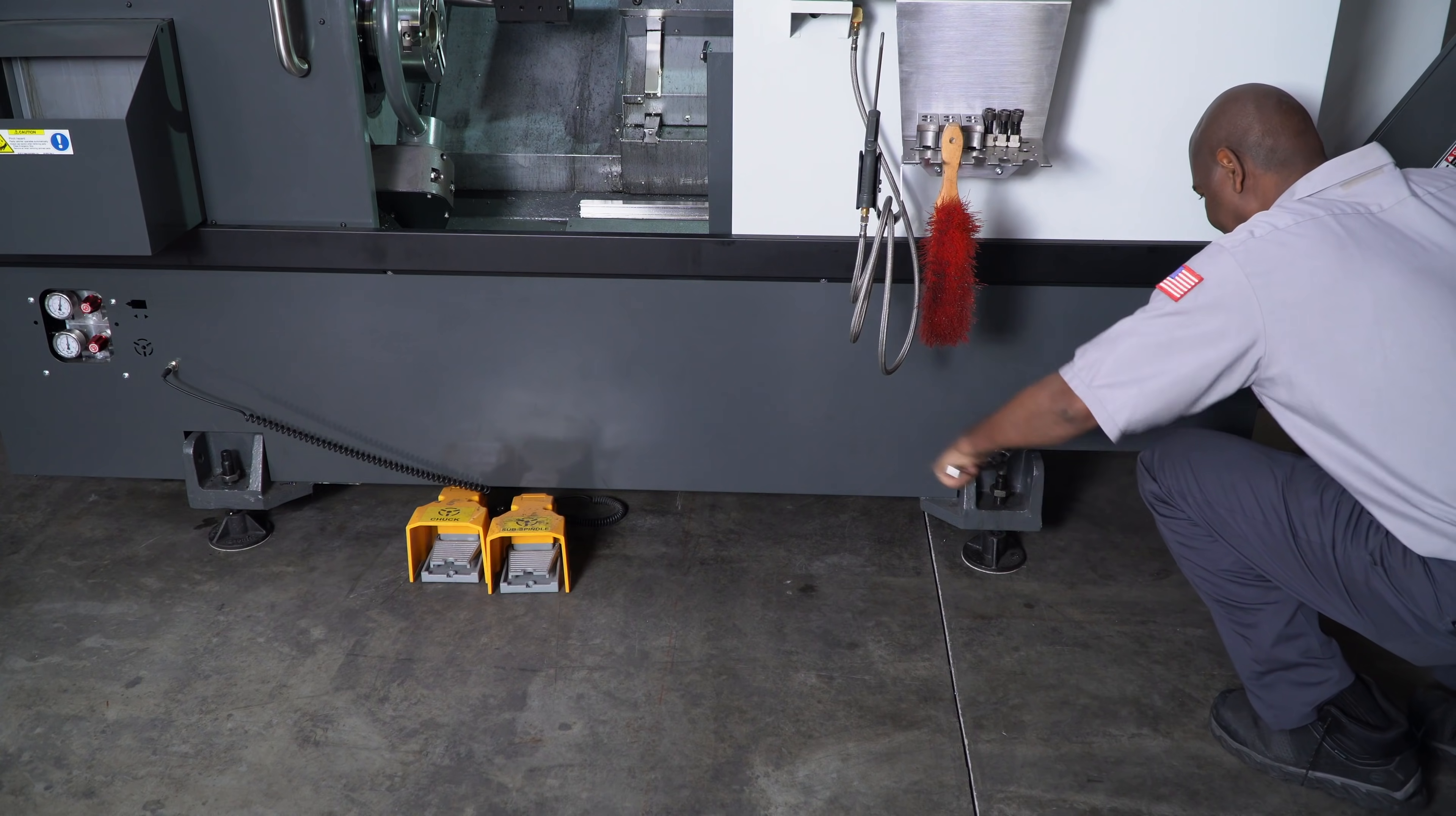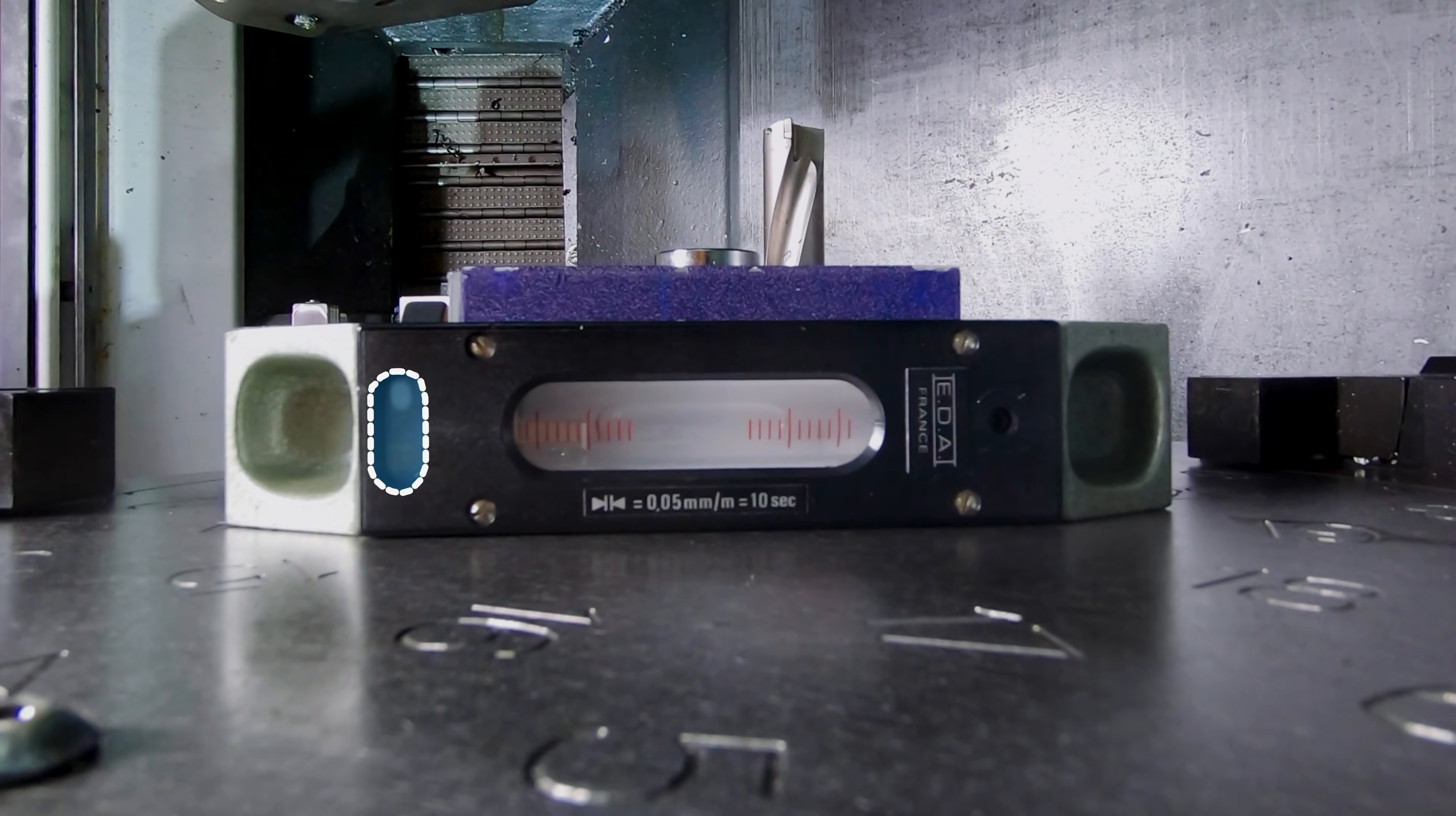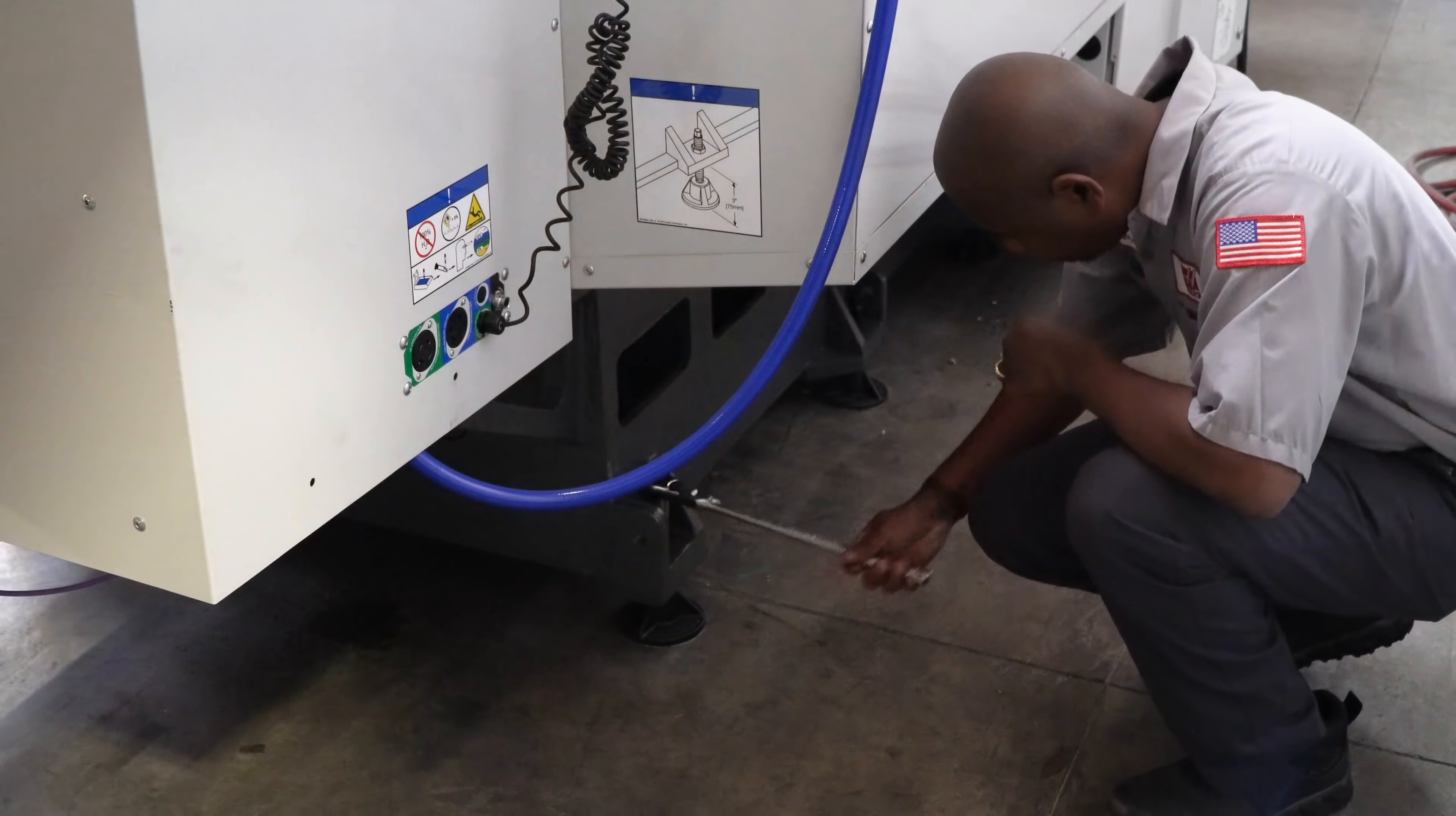Raise the front right leveling screw so it's not touching the pads. Looking at the short bubble, we need to raise the right rear leveling screw to bring the bubble to the center of the vial.